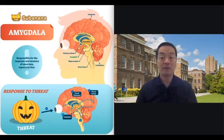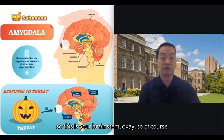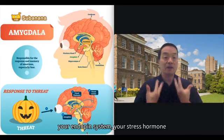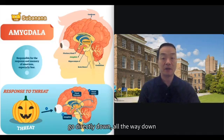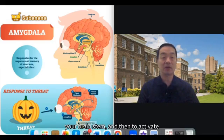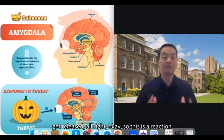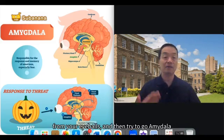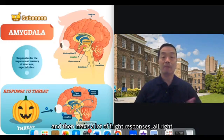Once your amygdala reacts, that further affects the brainstem. Something happens — your muscle reactions, your endocrine system, your stress hormones all get activated because of this signal going directly down the brainstem. For example, cortisol and other stress hormones get released. This is the stress reaction: what happens when you see something dangerous through your eyes triggers the amygdala, which sends signals all the way downward to produce a lot of fight-or-flight responses.